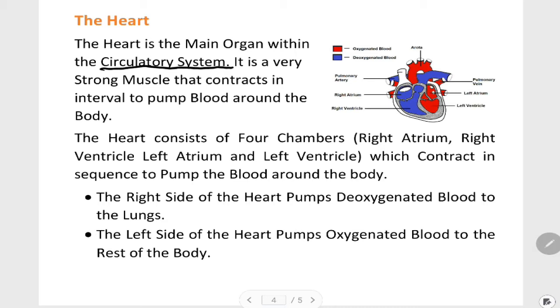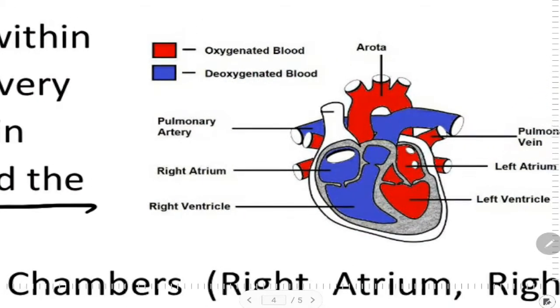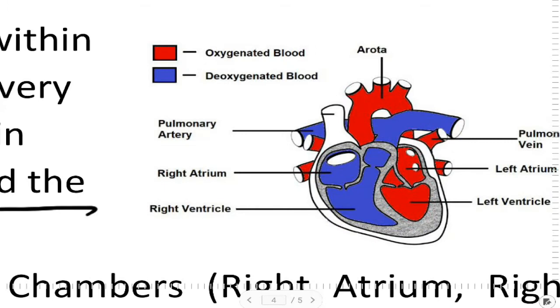So this is the most important thing you need to know. Let's look at the heart. The red one provides oxygenated blood, the blue one provides deoxygenated blood. The heart consists of four chambers.